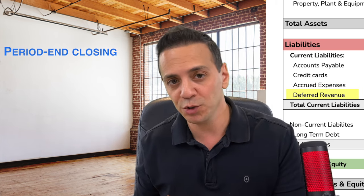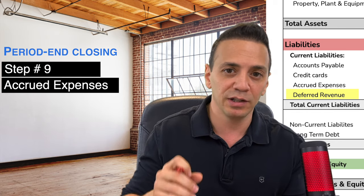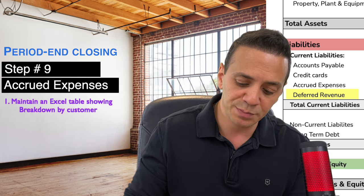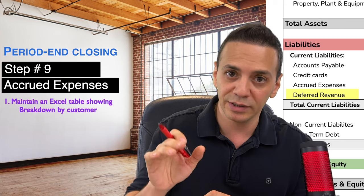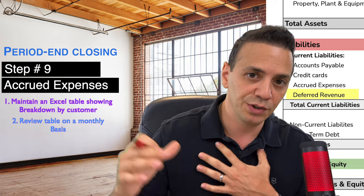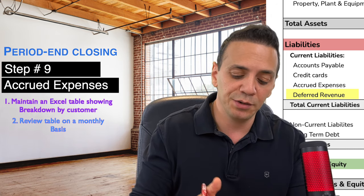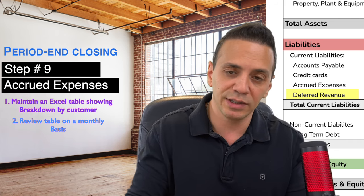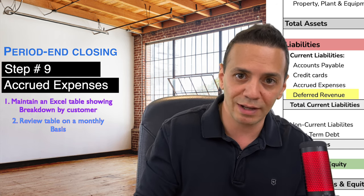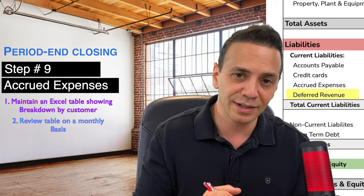Number nine is deferred revenue, also called unearned revenue. It's a liability because you've received funds from a customer but haven't yet delivered the good or service. Maintain an Excel table showing by customer and by payment what you received, then review monthly for reasonableness and amortize accordingly. For example, if you receive $100,000 for an entire year of platform fees, amortize it over 12 months and recognize one-twelfth as revenue to the P&L each month.